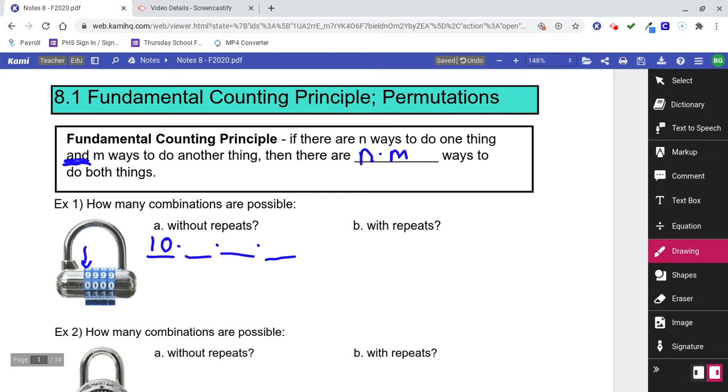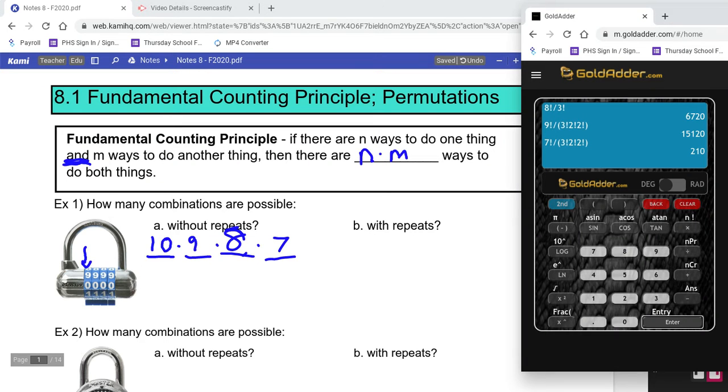Knowing that we can't repeat any of the numbers, once we've chosen that first number, how many choices would I have for the second position? 9, and then no repeats, so 8, and then 7. You're going to want a calculator for some of this stuff. 10 times 9 times 8 times 7 is 5,040 different combinations.